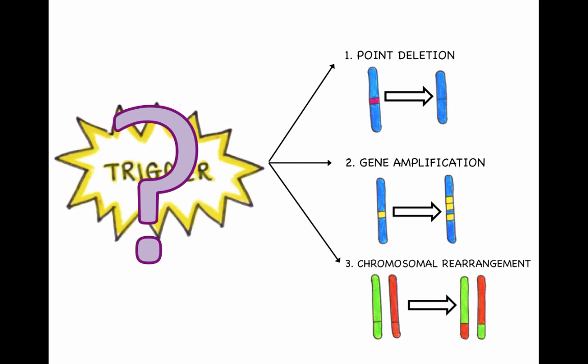For this tutorial, the third point, chromosomal rearrangement, is the most important. We'll talk more about this under chronic myeloid leukaemia.